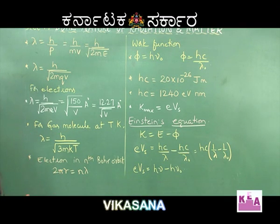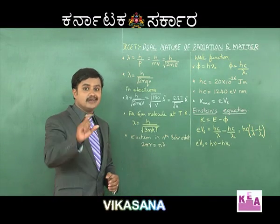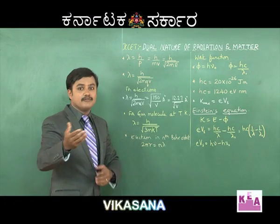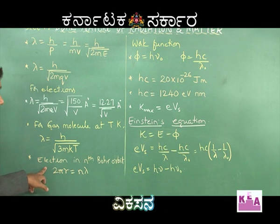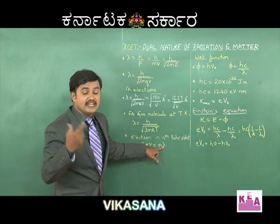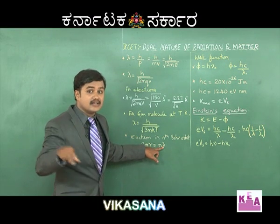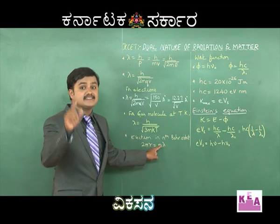For gas molecules at temperature T Kelvin, the de Broglie wavelength is given by λ = h/√(3mKT), where K is the Boltzmann constant. We also have a link between Bohr's frequency condition and de Broglie wavelength, connected by 2πr = nλ. This is the condition for any electron revolving in the nth orbit — its circumference should be an integral multiple of its de Broglie wavelength.